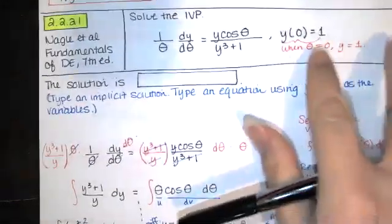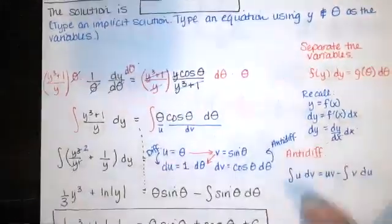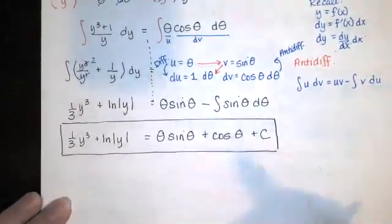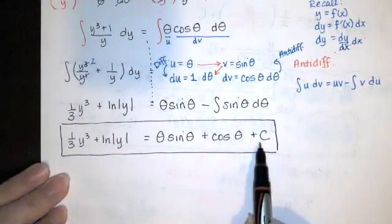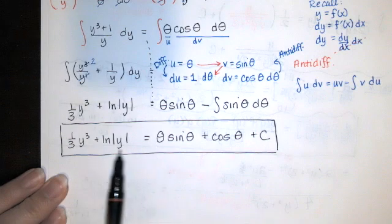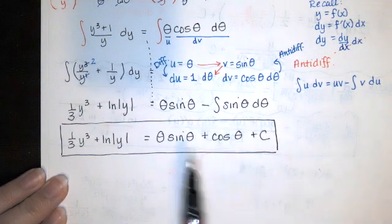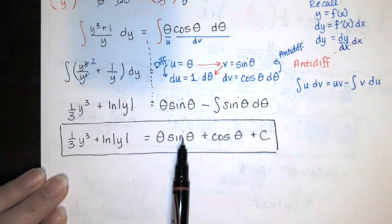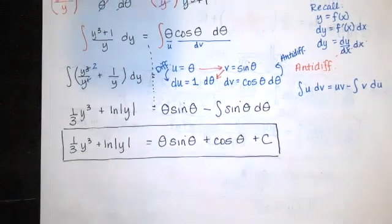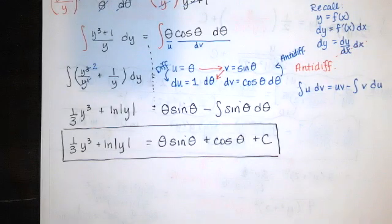So we can use those two values here in this equation to find the appropriate value for c. You're just going to substitute. This is an equation involving three variables: y, theta, and c. When you replace y with one and theta with zero, you'll find out what c has to be. So this video is going to be pretty short.